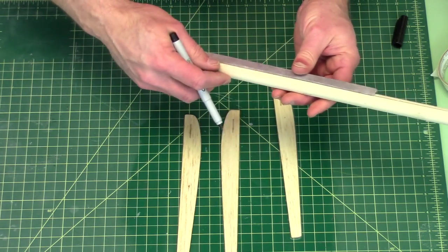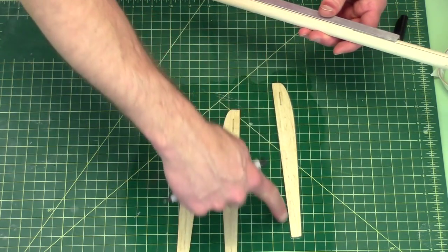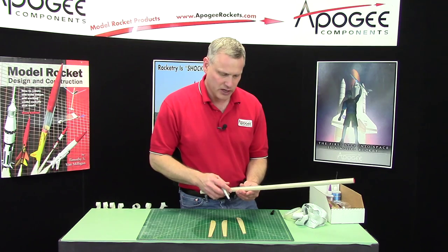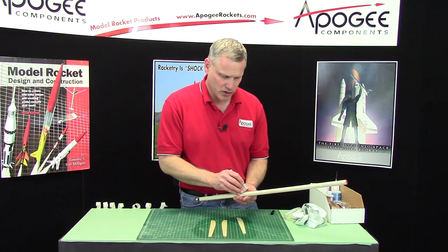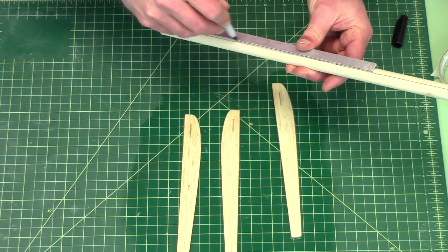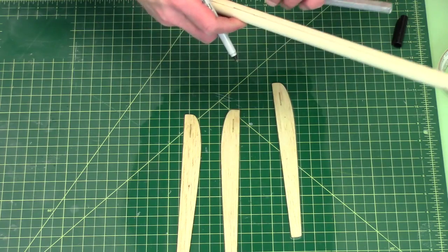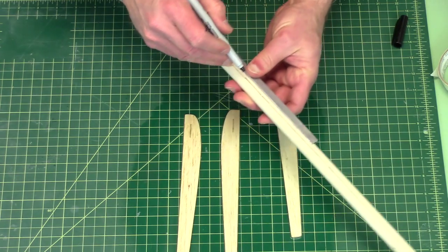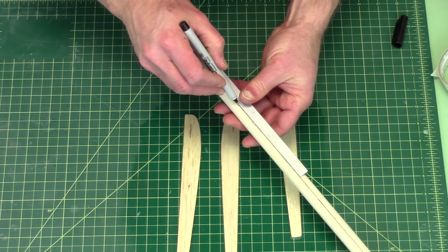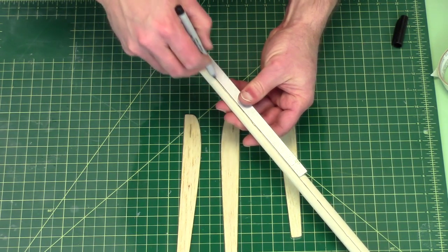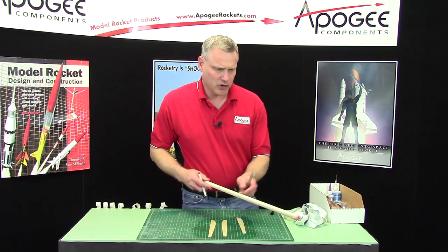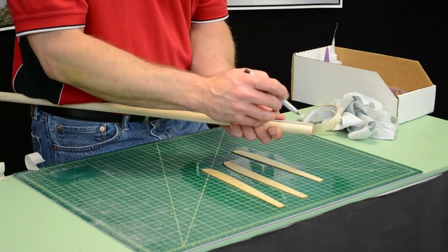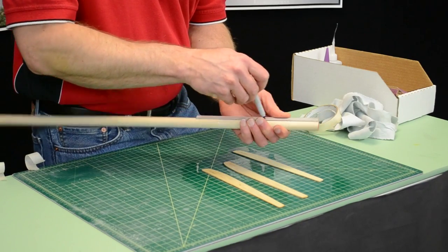We're going to use this line to line up the edge of the balsa fin because we need to make sure that these are aligned straight since they're somewhat flexible at this point. I'm going to do it on two sides because I can put two pieces all the way around the dowel.